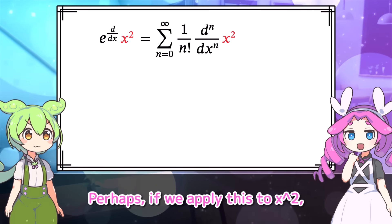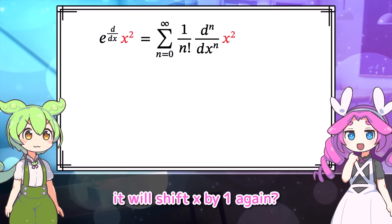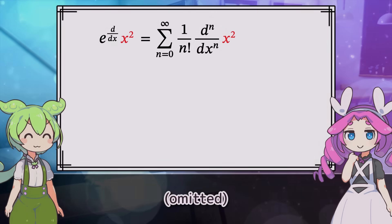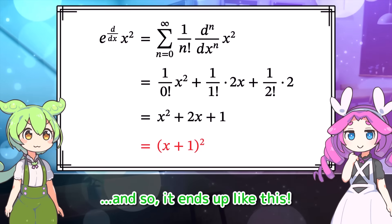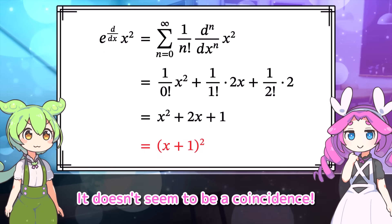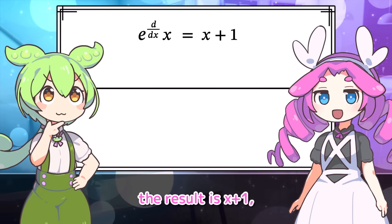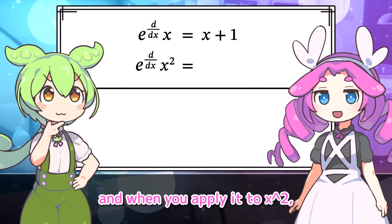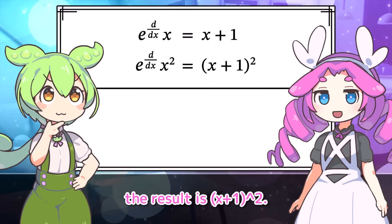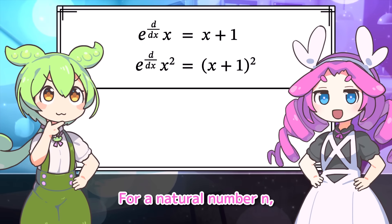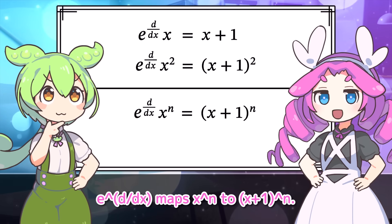Perhaps if we apply this to X squared, it will shift X by 1 again? That might be the case. Well, let's give it a try. And so it ends up like this. Just as predicted — it doesn't seem to be a coincidence. When you apply E to the D by DX to X, the result is X plus 1, and when you apply it to X squared, the result is X plus 1 squared. From this, we can make a certain conjecture: for a natural number N, E to the D by DX maps X to the N to X plus 1 to the N.